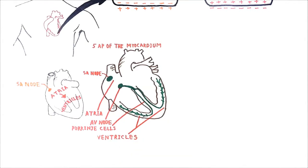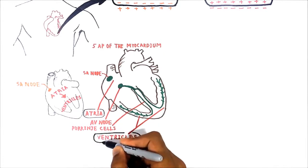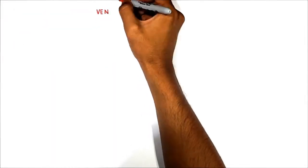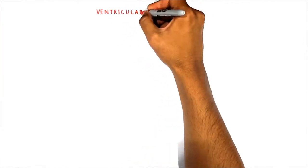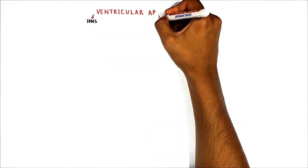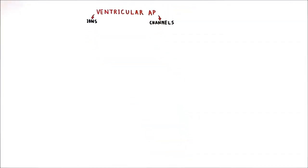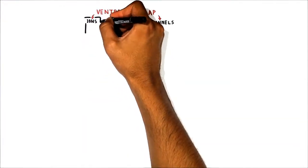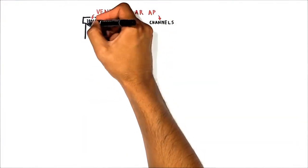There are five action potentials of the myocardium: action potentials of the SA node, atrial muscle, AV node, Purkinje cells, and contracting ventricular muscle. In this video, we will talk about action potentials in non-nodal cells, which involve atrial myocytes, ventricular myocytes, and Purkinje cells. First, we will talk about ventricular action potentials.